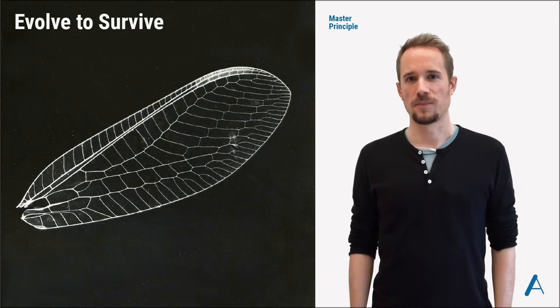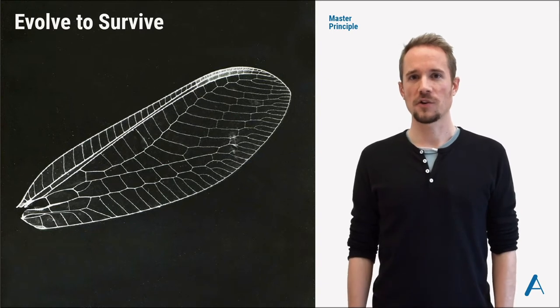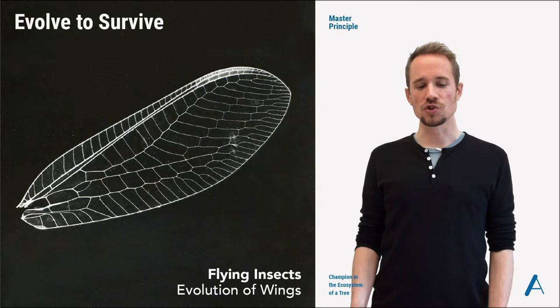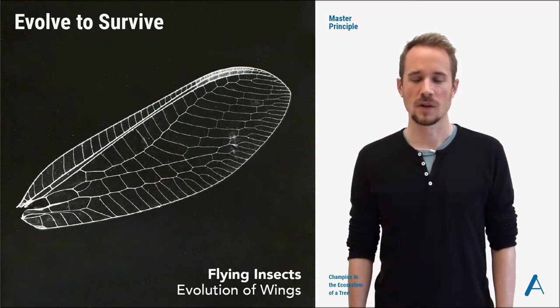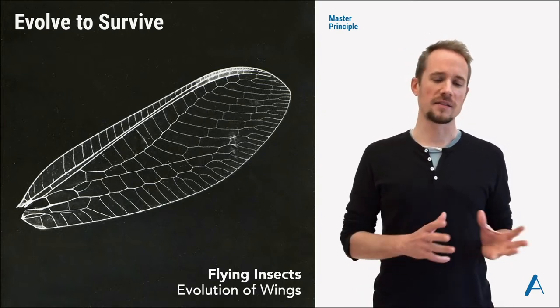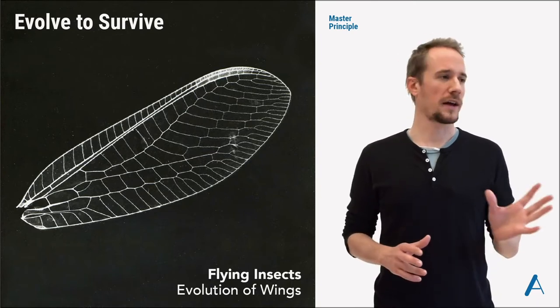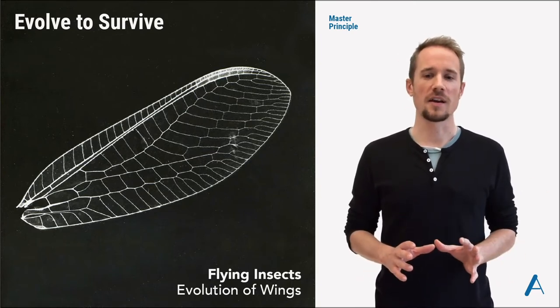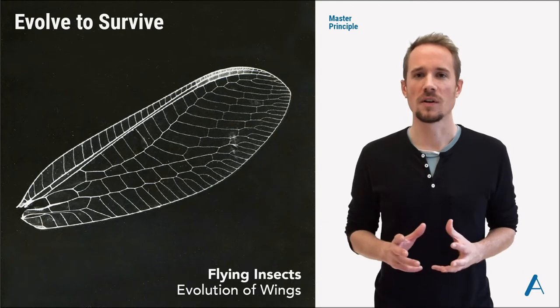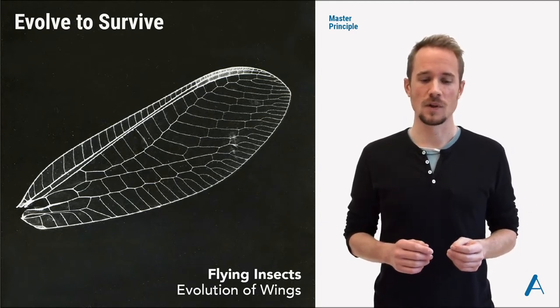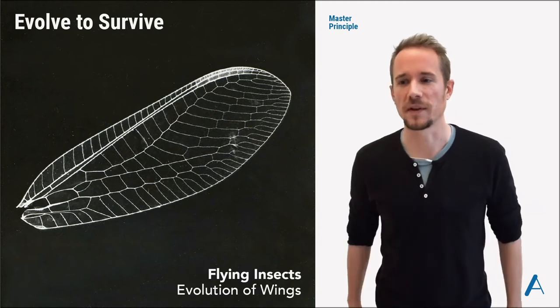Let's start with our first master principle: evolve to survive. Our example here are flying insects and the evolution of wings. In our tree ecosystem, flying insects exist everywhere. They fly around from tree to tree and are absolutely essential, for example, for the pollination of different trees. So what's the story behind the evolution of wings?